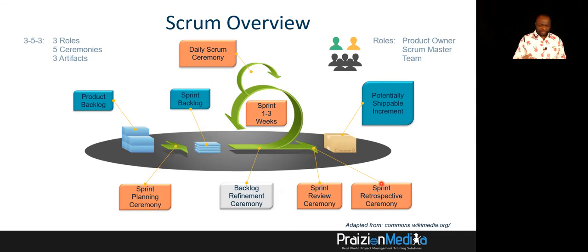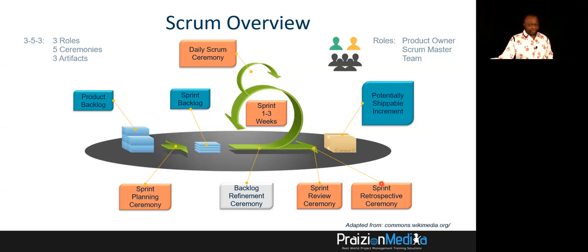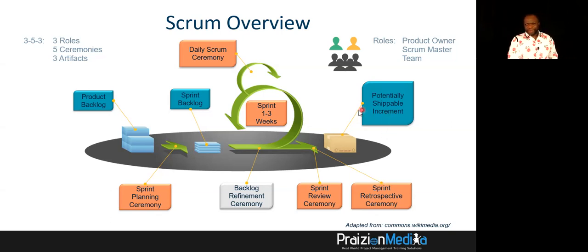We have a sprint retrospective ceremony where lessons learned are gathered within the team. It's a closed-door meeting — I accept you're invited, but you really shouldn't be in there. We say Agile Vegas: whatever happens in the sprint retrospective, it stays there. And ultimately we go back immediately and start off the next sprint — that's how it works.